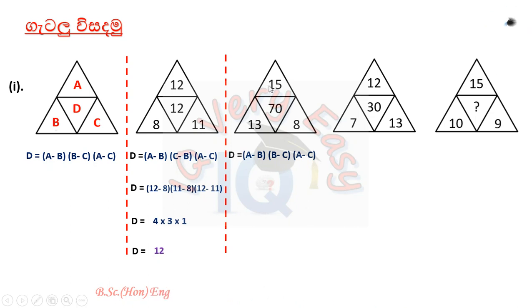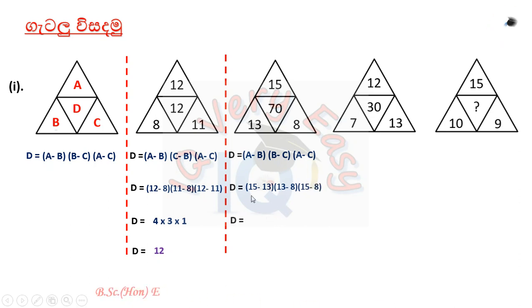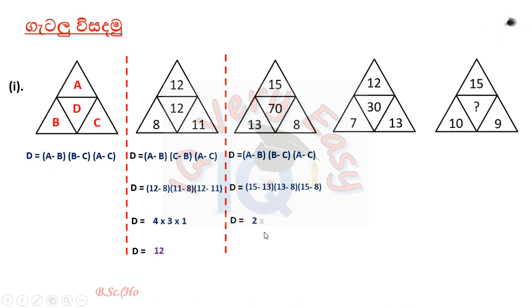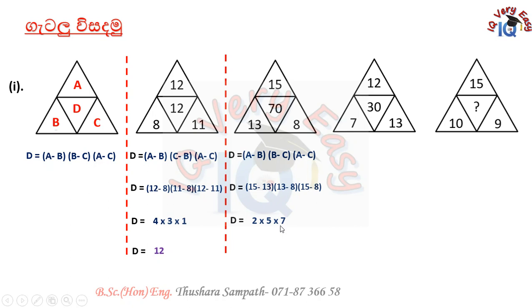A is 8, B is 10, C is 8. So 11 is 10, 11 is 8, 12 is 8. 12 is 8, 8 is 8. So 6 is 8. 12 is 8. So D is 8, 8 is 8.